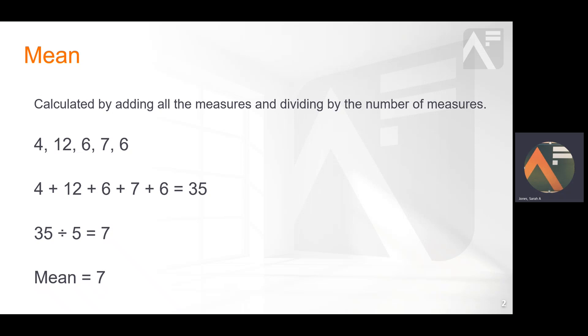Firstly, the mean is the most popular and is sometimes referred to as the average. It is calculated by adding up every single value and then dividing by the number of observations.